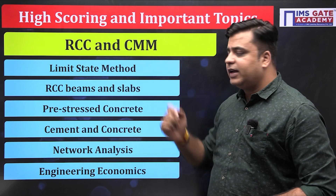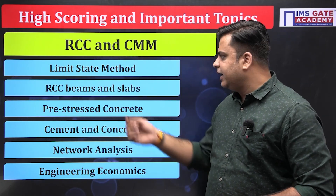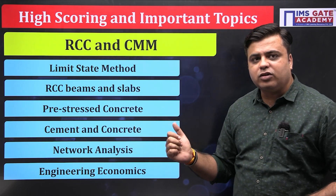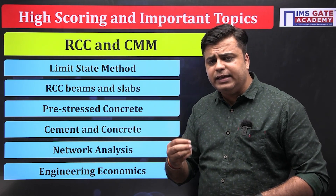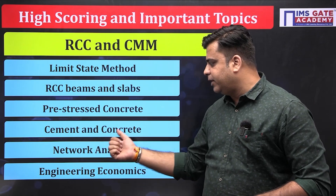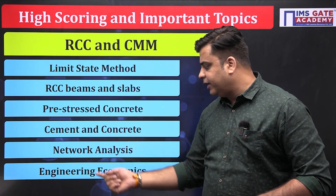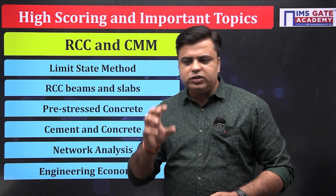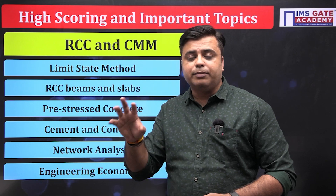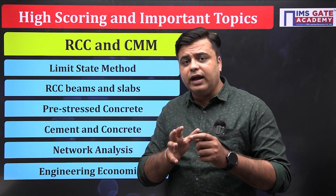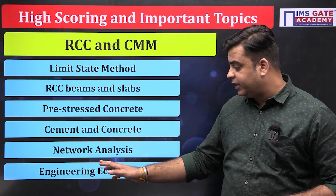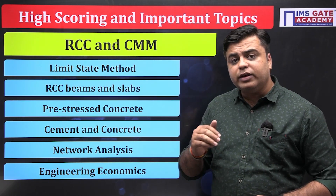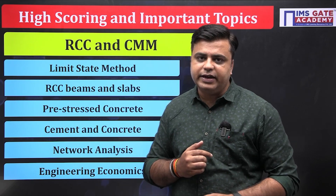For RCC and construction material and management, the important areas are limit state method, design of RCC beams and slabs, and pre-stressed concrete. Simple theoretical questions are also framed from cement and concrete as building materials. Then you have network analysis and engineering economics. Earlier, engineering economics questions were not asked much, but this year a lot of questions were framed from it — so please read engineering economics properly, as you can expect a question in GATE 2025.